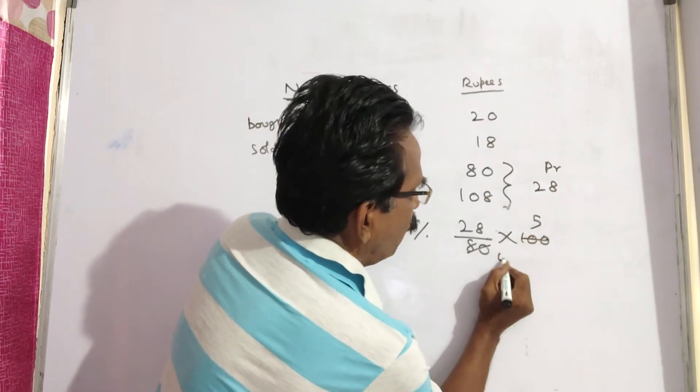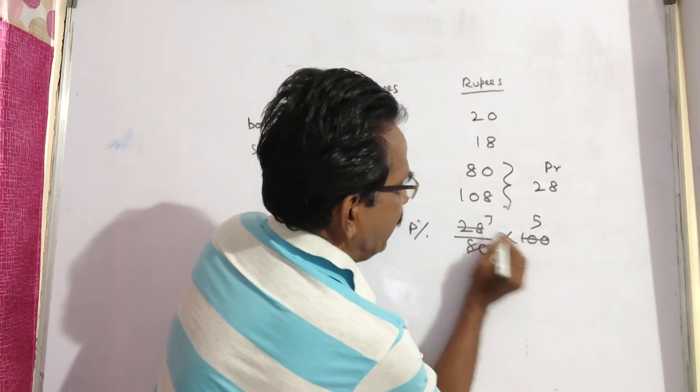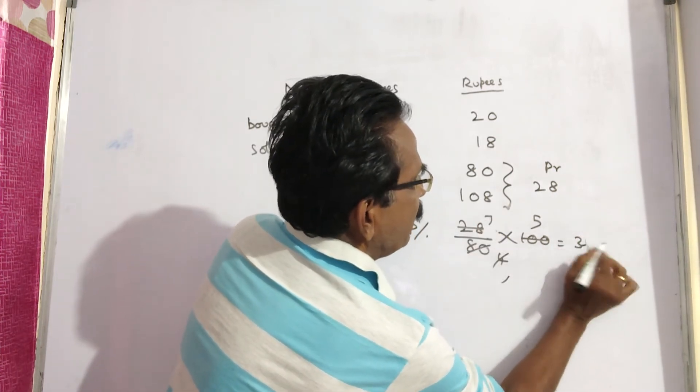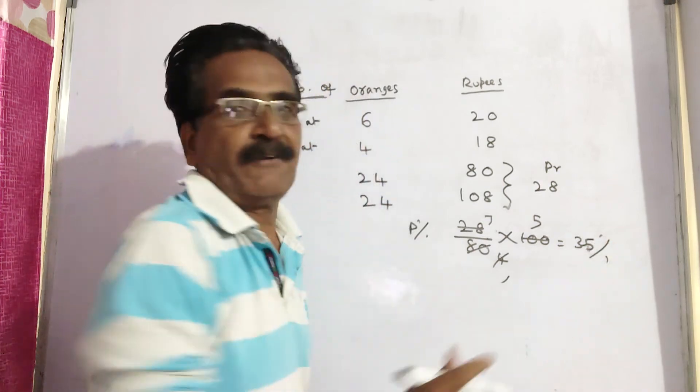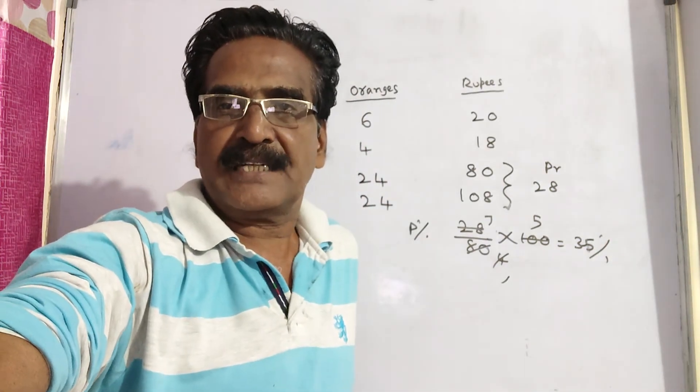28 by 80 into 100. So 35 percent is the answer. Okay friends, thank you.